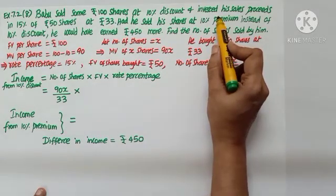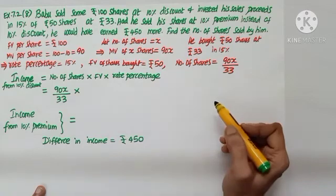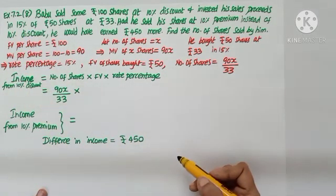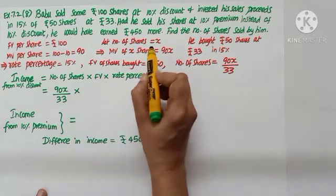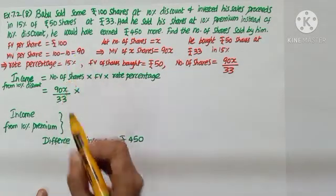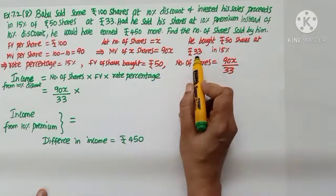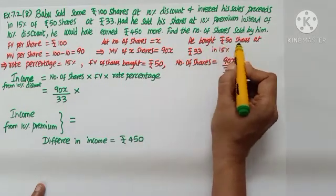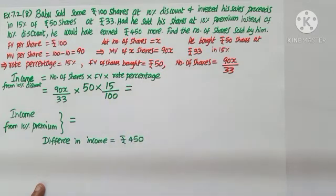He is investing that in 15% of Rs. 50 shares at Rs. 33. Number of shares bought is total market value (90X) divided by market value of one share (33): that is 90X by 33. Income equals number of shares (90X by 33) into face value (50) into rate percentage (15 by 100). Simplifying, we get 225X by 11.